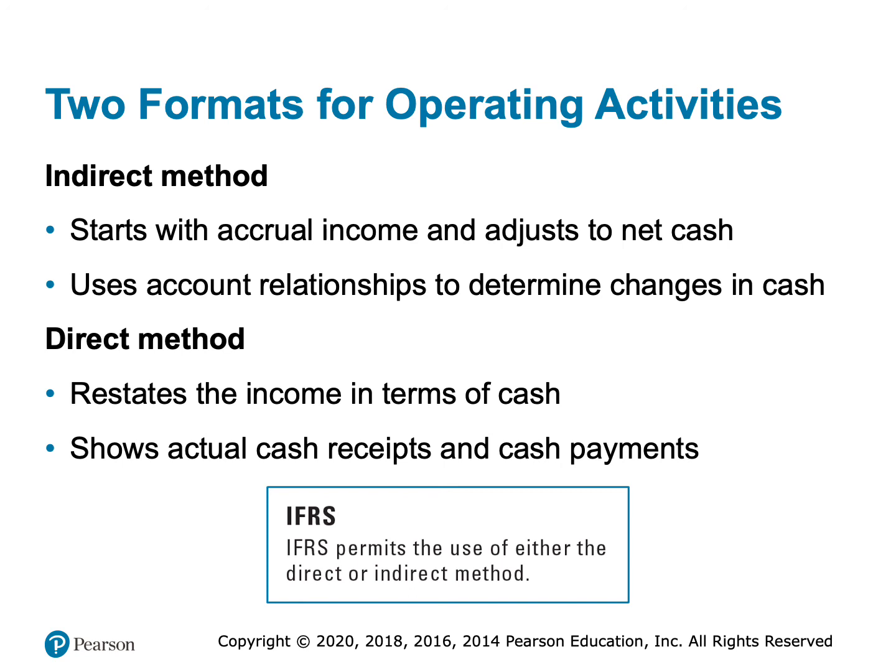There are two ways to calculate the operating activity section, or two methods of formatting it: the indirect and the direct method. GAAP and IFRS allow you to use either method. I'm only going to teach the indirect method because it is the method most commonly used and also the easiest. If you really want to learn the direct method, you can read about it in the appendix to chapter 14. The indirect method starts with that accrual accounting net income number and then adjusts it, converting it to a close approximation of a cash net income number.